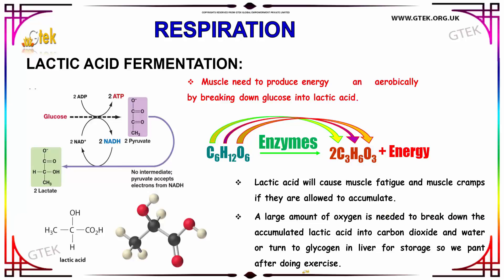Now we are going to move to the topic of lactic acid fermentation. The muscles need to produce energy anaerobically by breaking down glucose into lactic acid. Glucose is broken down in the presence of enzymes, which gives lactic acid — represented as 2C₃H₆O₃ — and energy. Lactic acid causes muscle fatigue and muscle cramps if it is allowed to accumulate.